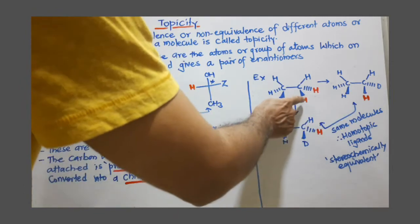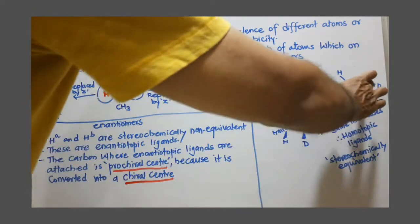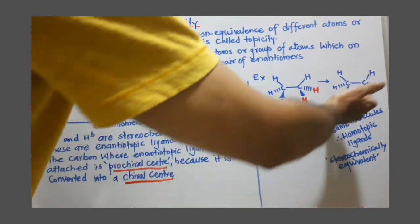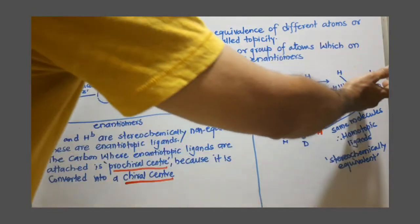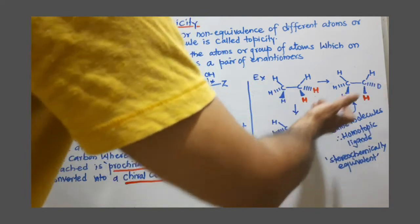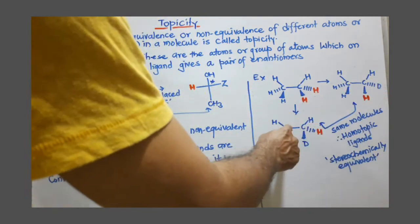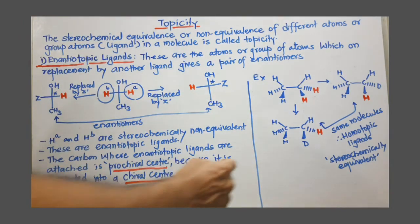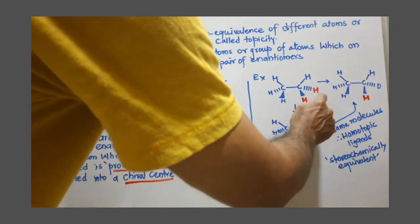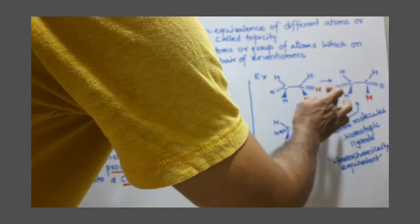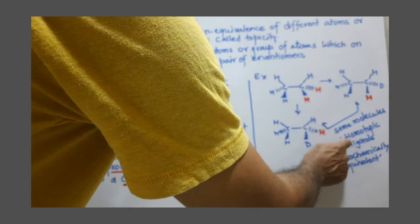If I replace this proton with D, I get this molecule, and if I replace the other proton with D, I get this molecule. If you look at the structures of these two molecules, they are one and the same — they are neither enantiomers nor diastereomers, but one and same, because there is free rotation around this carbon-carbon bond. So these two protons are stereochemically equivalent, and stereochemically equivalent protons are called homotopic ligands.